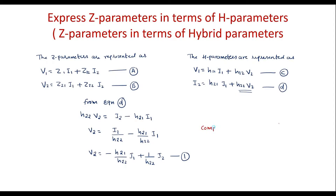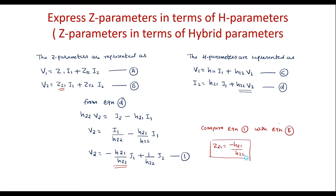Now compare equation 1 with equation B. They are of the same form in V2. The coefficient of I1 is Z21 in equation B; here, the coefficient of I1 is minus H21 by H22. Therefore, Z21 is equal to minus H21 by H22. The coefficient of I2 is Z22, which equals 1 over H22. Therefore, Z22 is equal to 1 over H22.